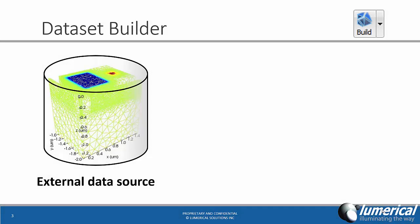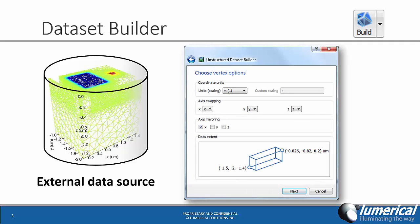The dataset builder can be accessed from the Build menu button, and can operate on any structured finite element data source. Here we assume that an external data source contains some data on a finite element mesh, which can be imported into the Lumerical design environment. The dataset builder provides a convenient and easy-to-use wizard to guide you through the process. For example, the imported grid can be scaled and rotated as it's built.